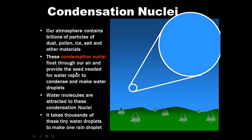The last thing I think we're going to talk about here is condensation nuclei. What the heck are condensation nuclei? Our atmosphere contains billions of particles of dust, pollen, ice, and other materials. We call these condensation nuclei that float through our air, and they essentially provide the seed needed for water vapor to condense on and make water droplets. Because water is sticky. It wants to stick to something. And condensation nuclei provide the surface for water to do this.